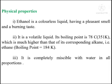Physical properties of ethanol: Ethanol is a colorless liquid with a pleasant smell and a burning taste. It is a volatile liquid — meaning it evaporates easily. Its boiling point is 78°C, or 351 Kelvin, which is much higher than that of the corresponding alkene — ethene — whose boiling point is 184 Kelvin. Ethanol is completely miscible with water in all proportions.